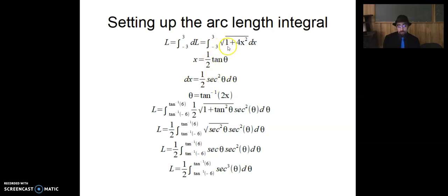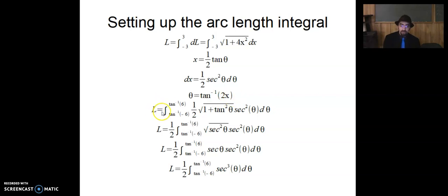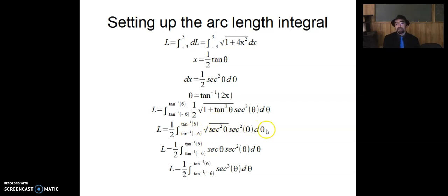Whenever we do a substitution, we have to change our bounds from being in terms of x to being in terms of our new variable. For integrating with respect to theta: theta equals inverse tangent of 2x, because if x equals 1 half tan theta, then 2x equals tan theta, and taking inverse tan of both sides gives theta equals inverse tan of 2x. So our length integral equals the integral from inverse tan of negative 6 to inverse tan of positive 6 of 1 half times square root of 1 plus tan squared times secant squared theta d theta. Since 1 plus tan squared equals secant squared, we can undo the squaring and the square root to get just secant theta.